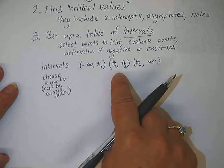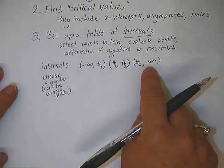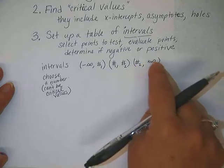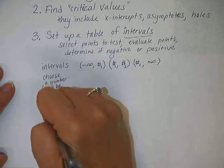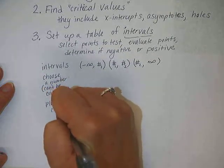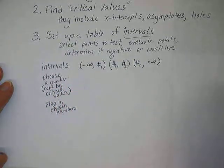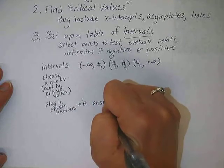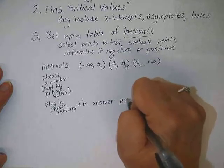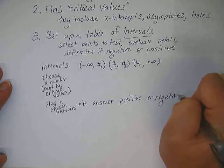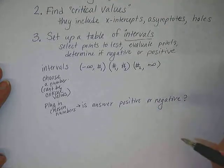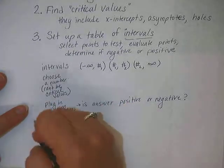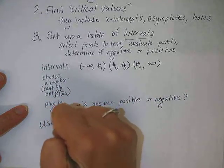If one interval goes from negative three to positive one, you could use zero — always use zero when you can because it's easy. If the last interval goes from positive one to infinity, choose something like positive two. After choosing numbers in your intervals, plug them into the equation and evaluate whether the answer is positive or negative. If it's positive it's greater than zero; if it's negative it's less than zero.